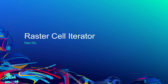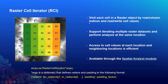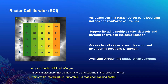RCI allows you to visit each cell in a raster object by row/column indices and rewrite cell values. Because of the ability to access cell values, it provides many possibilities for custom raster analysis. RCI supports iterating multiple raster datasets and performing analysis at the same location, so you're not limited to just one raster dataset. Access to cell values at each location and neighboring location is efficient — from a performance perspective, the underlying implementation leverages pixel blocks already loaded in memory to guarantee efficient read-write access.